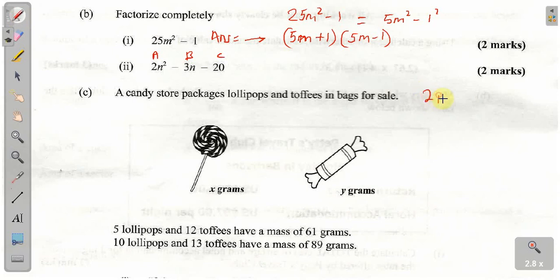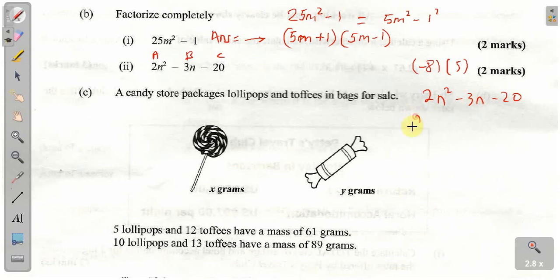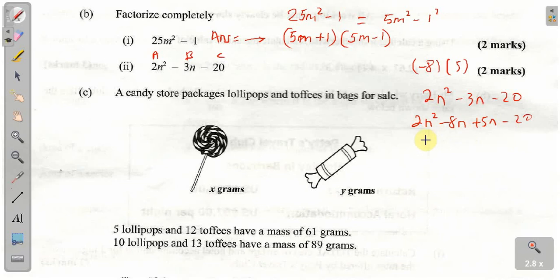We have 2N squared minus 3N minus 20. Using factors negative 8 and 5, we rewrite this as 2N squared minus 8N plus 5N minus 20. Notice that minus 8N plus 5N gives you minus 3N, which is what we want. Now we have a total of four terms — 1, 2, 3, 4 — and we can factor this by grouping: group the first two terms and factor those, then group the last two terms and factor those.